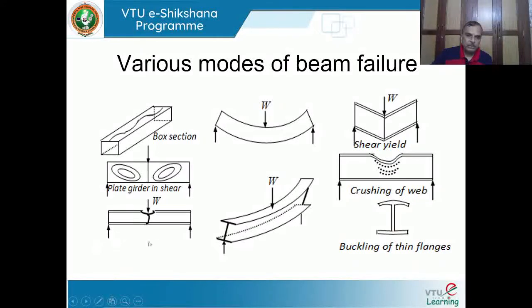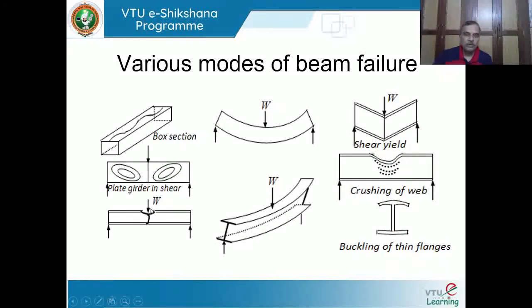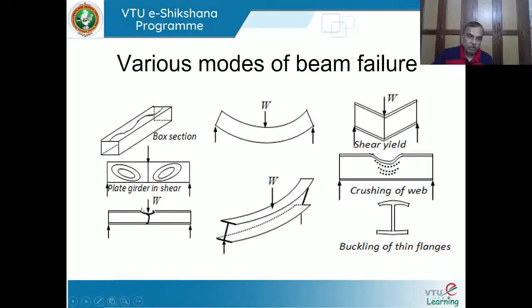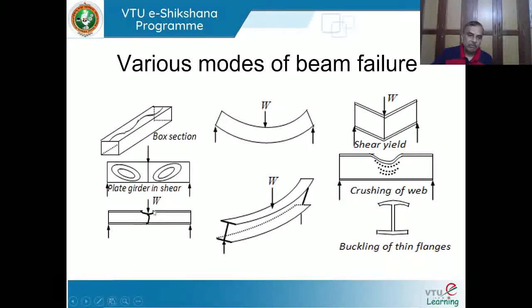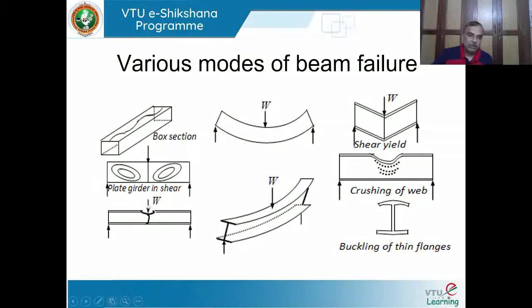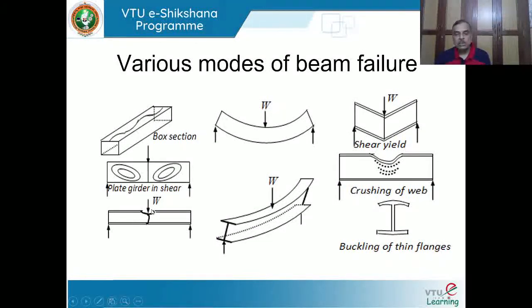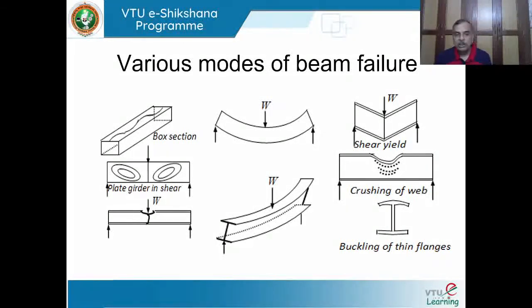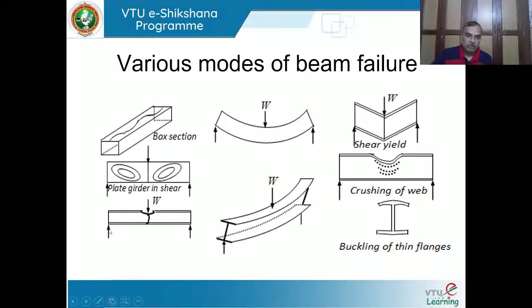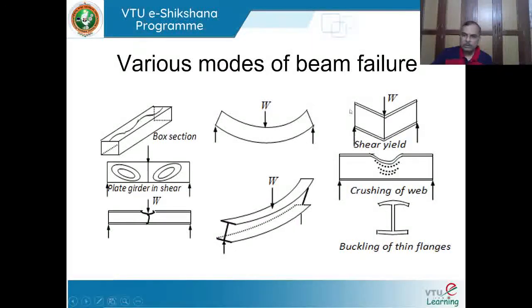For a simply supported beam with concentrated load at center, as the section undergoes yielding, the flange element alone can undergo yielding - this is flange yielding. Yielding spreads but more yielding occurs in the compression flange. Sometimes crushing can happen depending on material type: ductile material yields, and if brittle behavior occurs we notice crushing at that location - similar to an RCC beam where concrete crushes at the top near center.